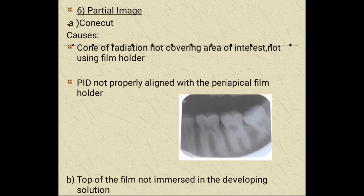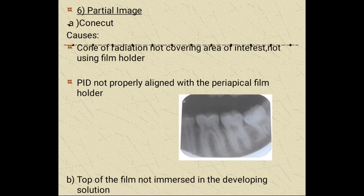A partial image, also known as cone cut, occurs when part of the image is missing because the exposure does not happen properly — the cone of radiation is not covering the area of interest, no film holder is used, or it is not properly aligned with the periapical film holder. Also, the top of the film may not be immersed in the developing solution. We can correct it by making sure the cone is properly centered over the area of interest both vertically and horizontally, ensuring the PID and aiming ring are aligned, maintaining the level of solution in processing tanks, and making sure the film is completely immersed during processing.